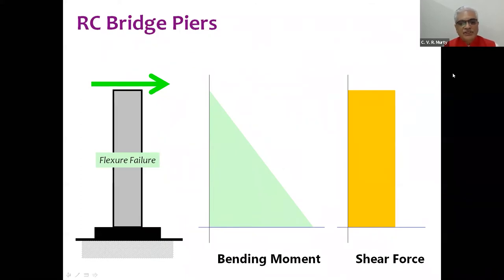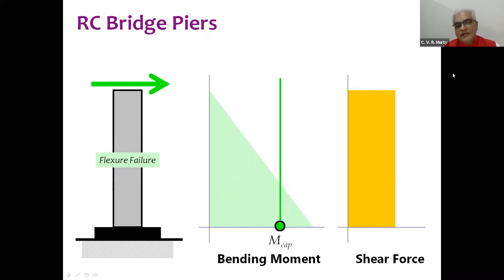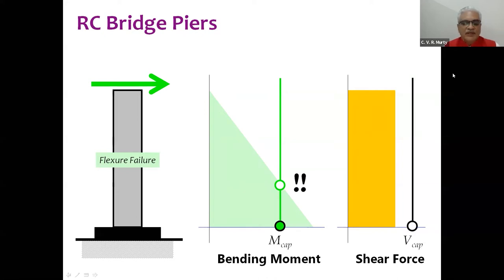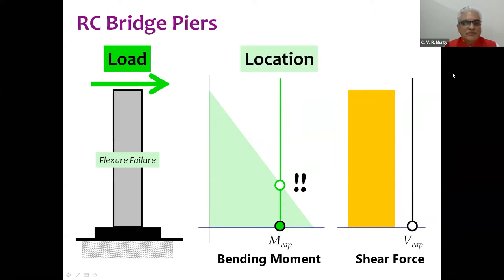In flexure failure, we have a shear force on top, we know our demand in bending moment and shear force, and we have chosen a section with some steel so we know the moment capacity. In this case the moment capacity is less than the moment demand, so a plastic hinge forms at the base of the pier. We must ensure the shear capacity is large enough that the member never reaches the shear capacity — so it fails only in flexure. We know the load, the location of the damage, and the mode of damage.